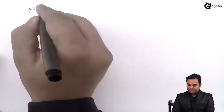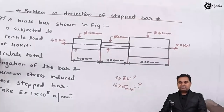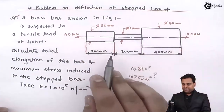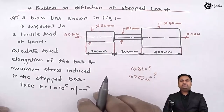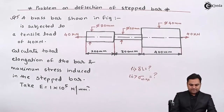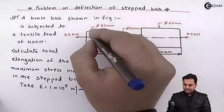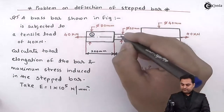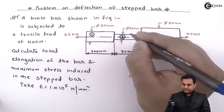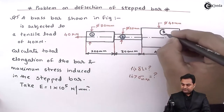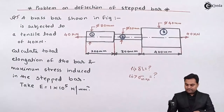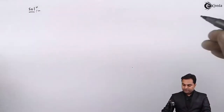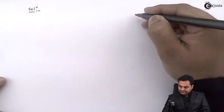In the solution, we can see this stepped bar has three different diameters and three different lengths, so it is better to divide it into three parts. This will be the first section, here we have the second section, and at last we have the third section.